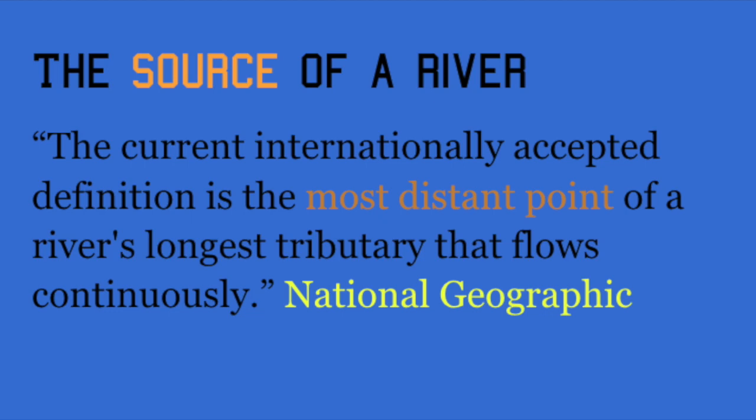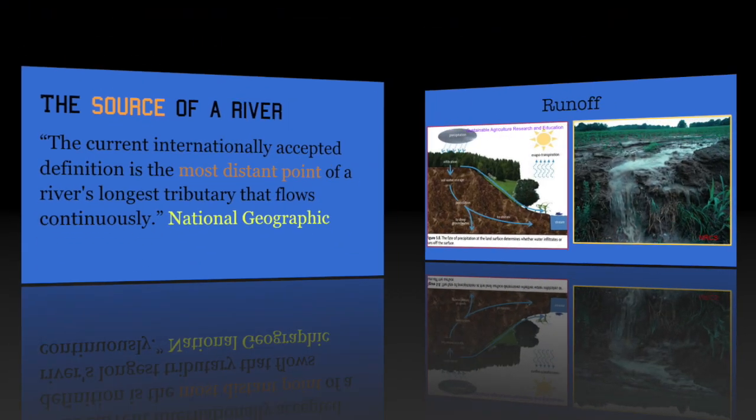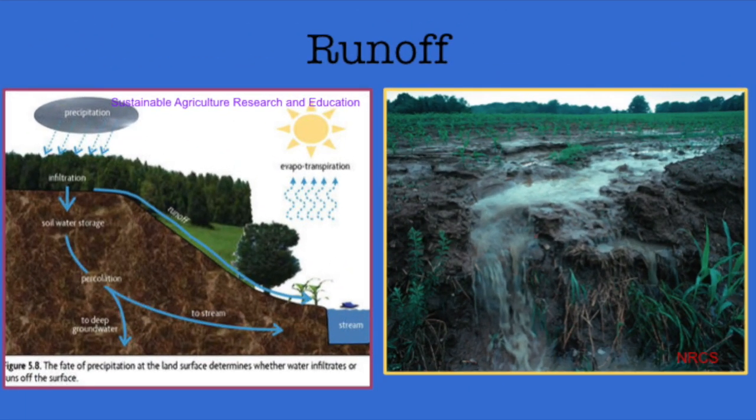Gravity causes water to flow downhill. Runoff is one of the most common sources for the start of a river or stream. Not all the water that falls as rain soaks into the ground — runoff is the extra water. As it moves downhill, it begins to gather in small channels called rills.